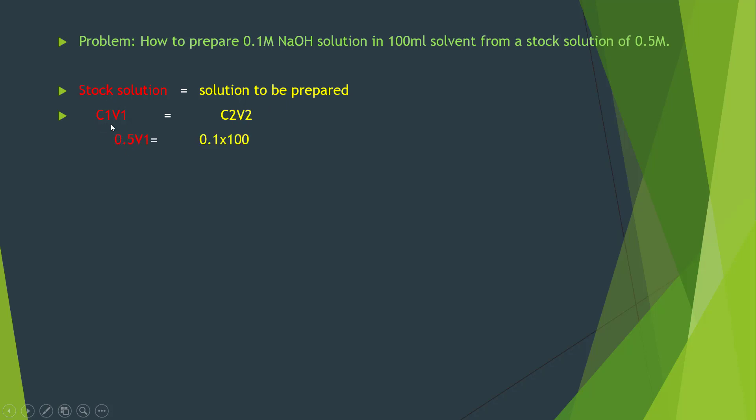The stock solution has a concentration 0.5 molar and the volume is V1. V1 is the volume that has to be taken from the original solution for the preparation of 0.1 molar solution. And over here on the right side, you see the new concentration is 0.1 molar and the volume in which this solution would be prepared is 100 ml.